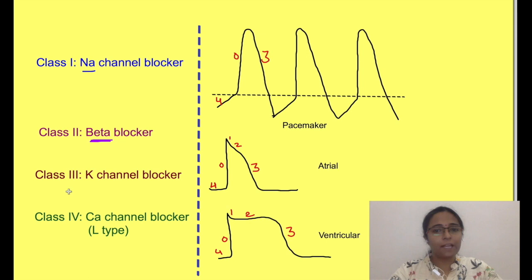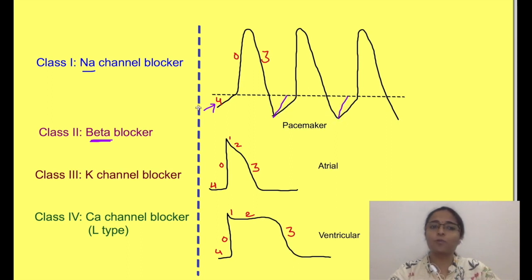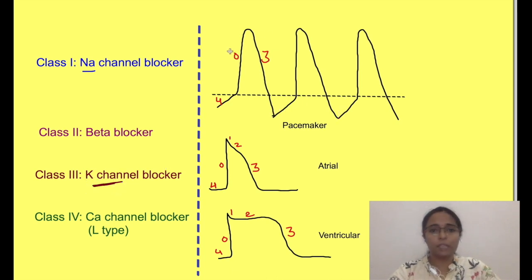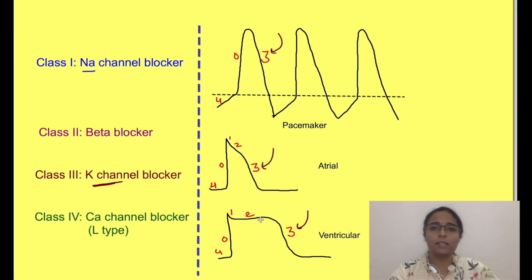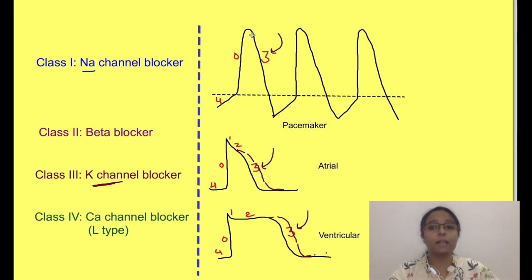Class 2 drugs are beta blockers. They act on phase 4 of pacemaker action potential. Normally sympathetic activity increases the slope of phase 4, so if we block sympathetic activity, phase 4 becomes less steep, ultimately decreasing the number of impulses generated. Class 3 drugs, i.e. potassium channel blockers, act on phase 3 for both pacemaker and contractile action potentials. Potassium ions cannot exit the cells, so it takes longer for the membrane to repolarize, increasing action potential duration and keeping cells refractory for longer.